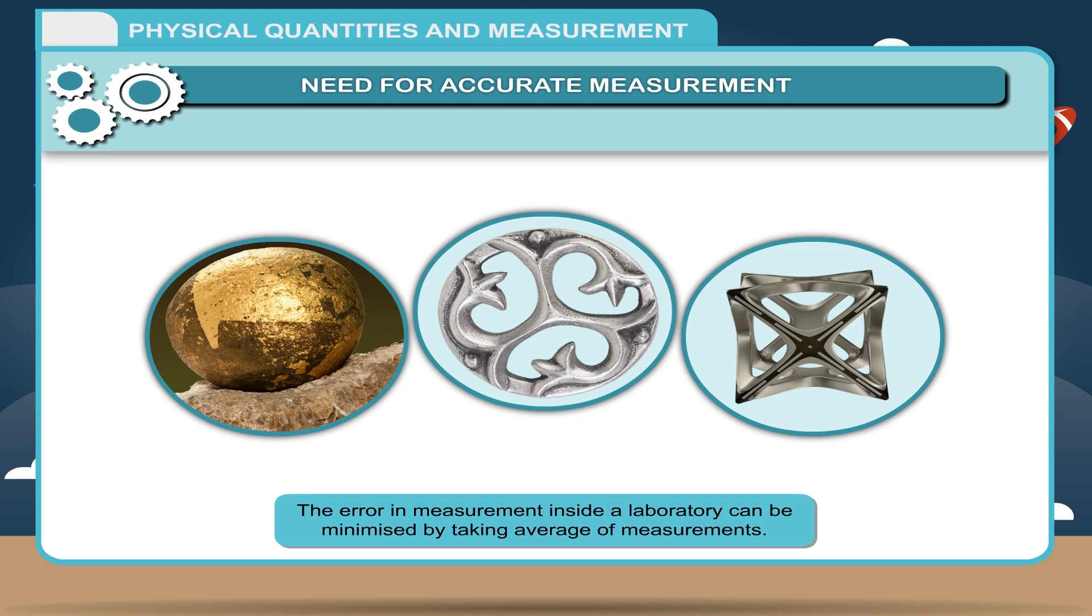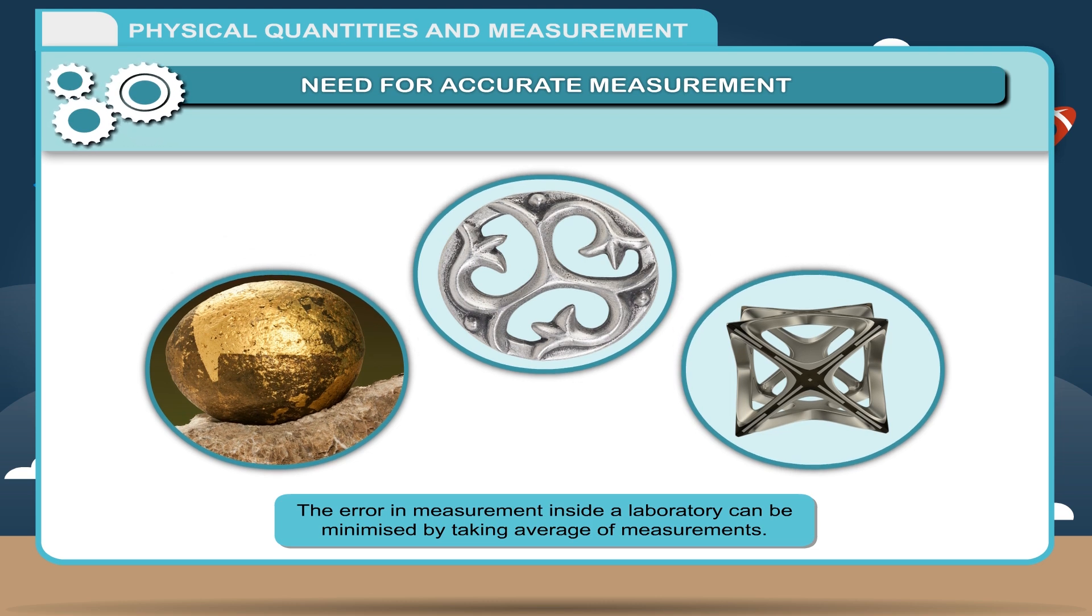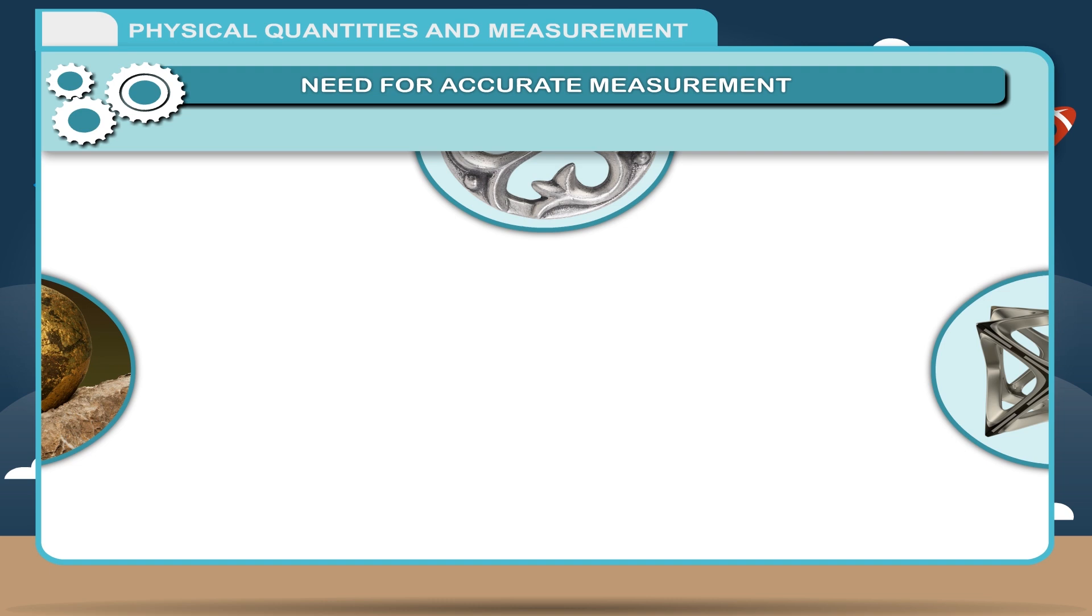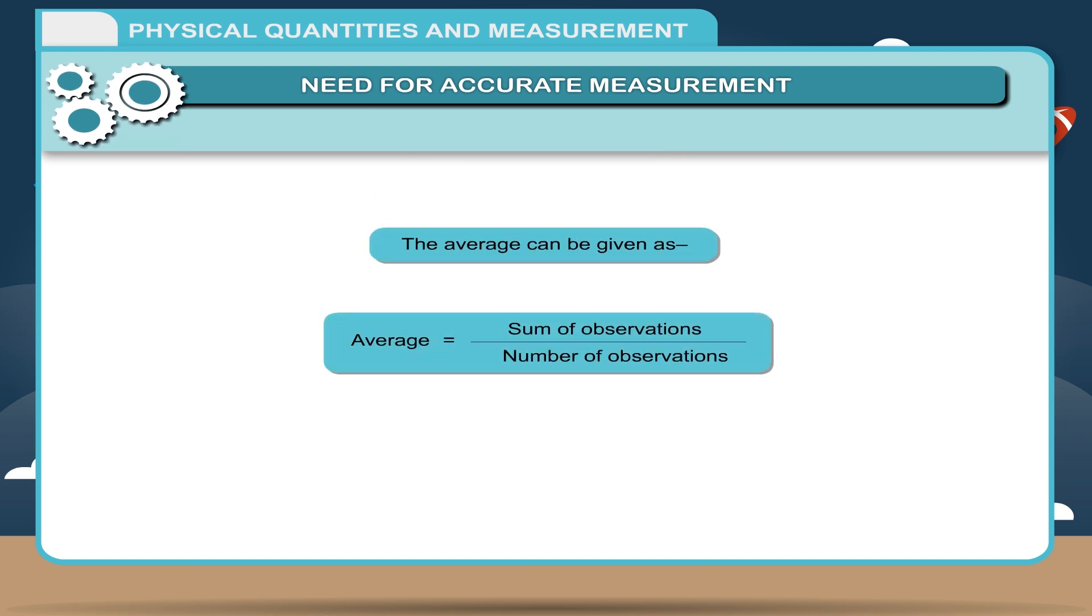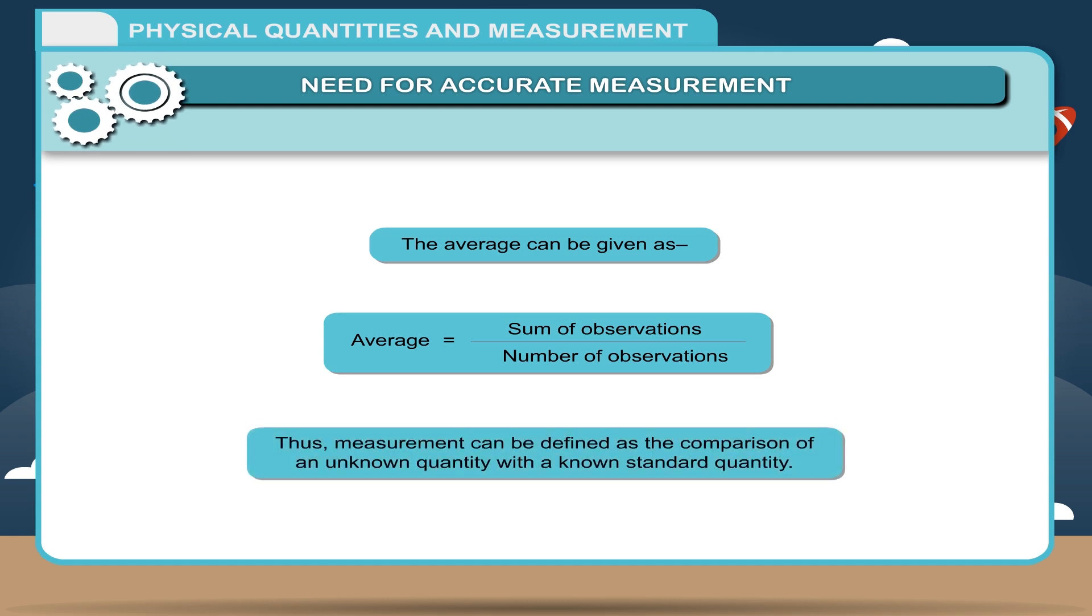The error in measurement inside a laboratory can be minimized by taking average of measurements. The average can be given as average equals sum of observations divided by number of observations. Thus, measurement can be defined as the comparison of an unknown quantity with a known standard quantity.